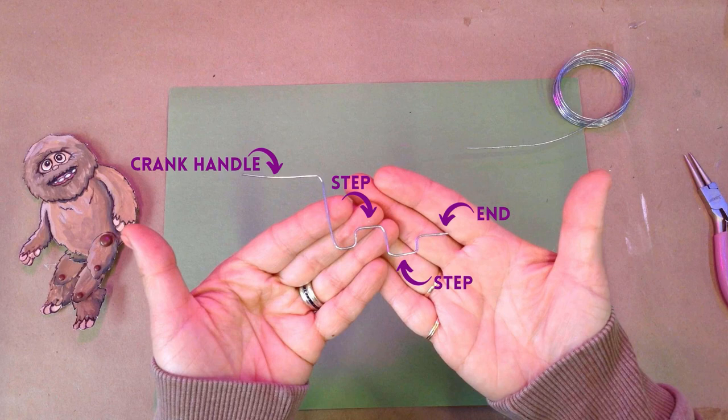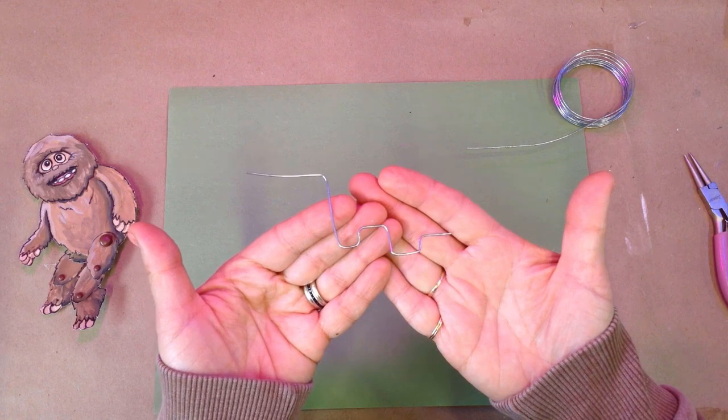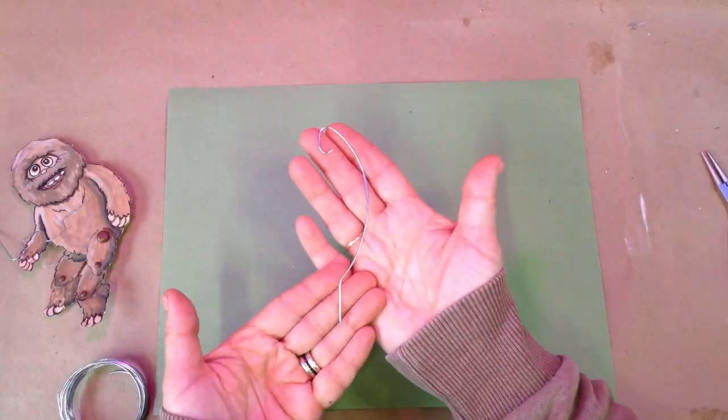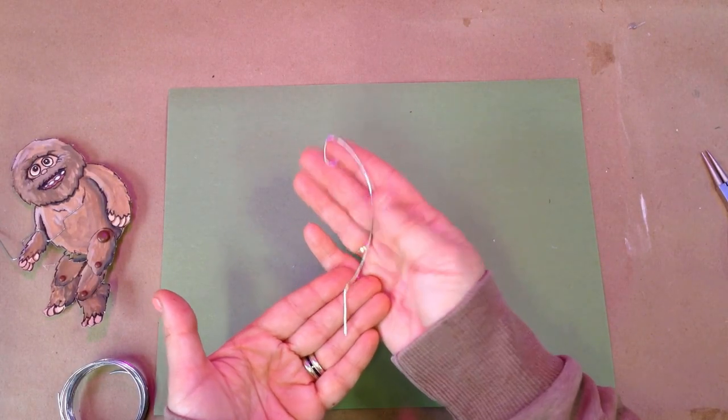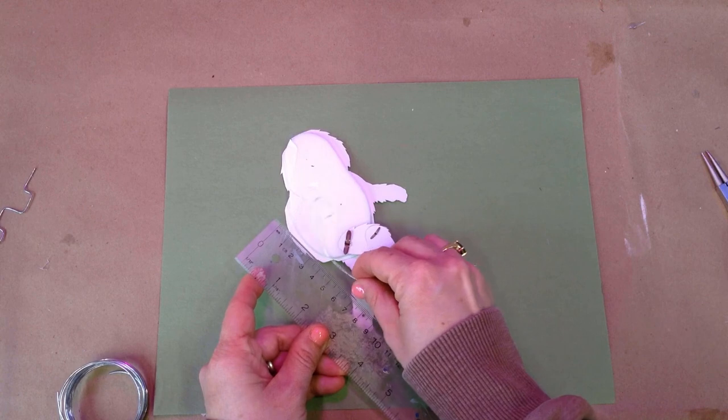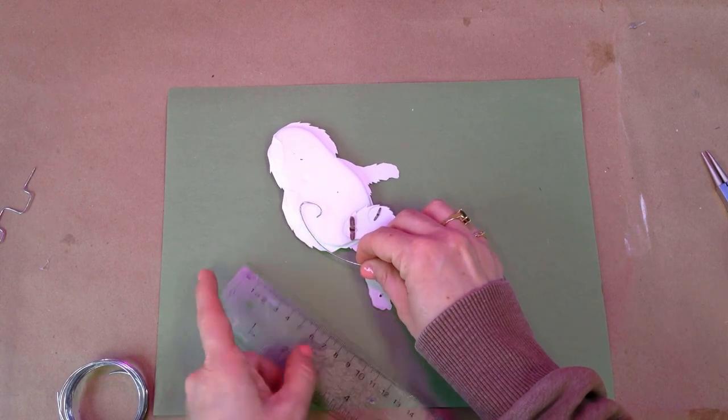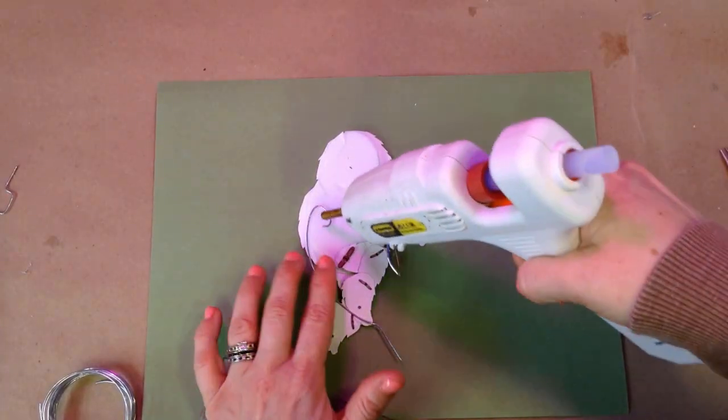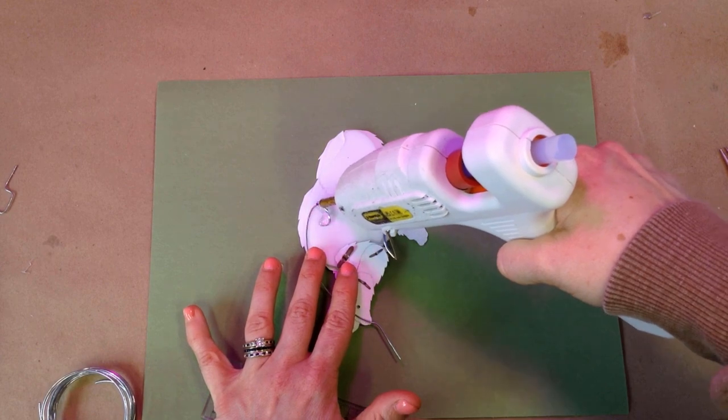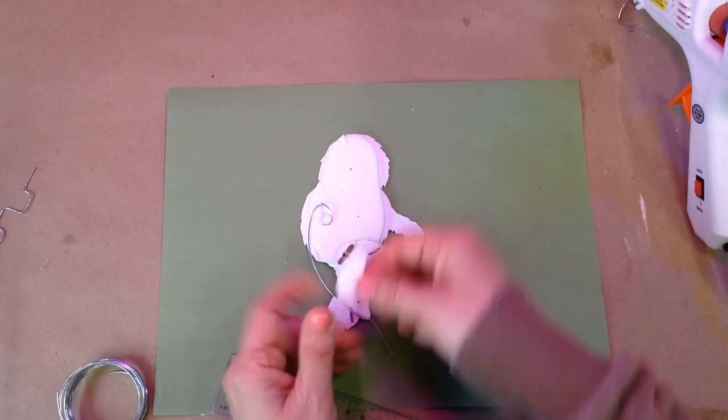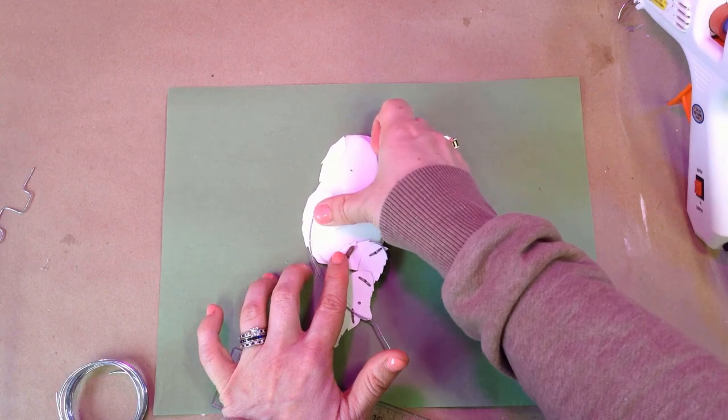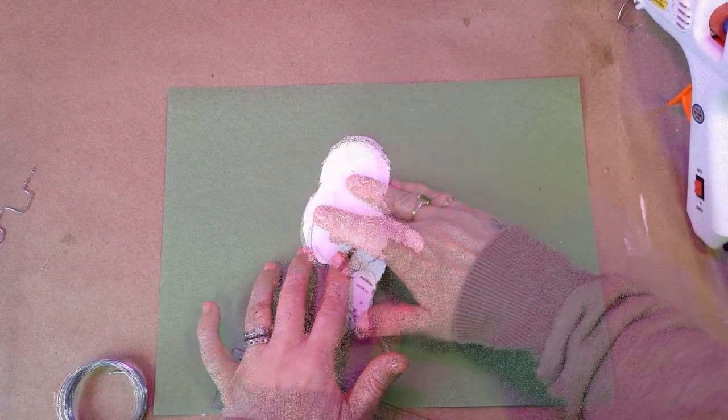I used the same wire to make this loopy hook thingy. This is used to suspend Bigfoot's body. The top of this suspension hook should sit about 4 centimeters up from the base of Biggie's torso. I stuck it on with a blob of hot glue, covered with a scrap of paper.